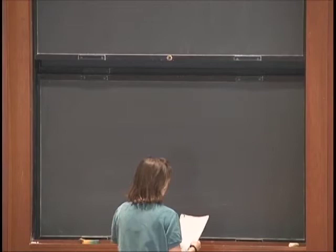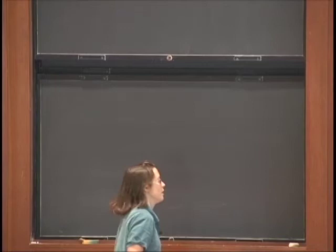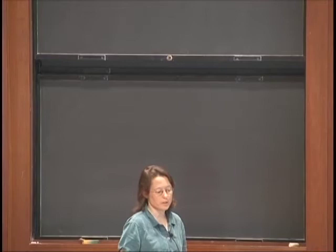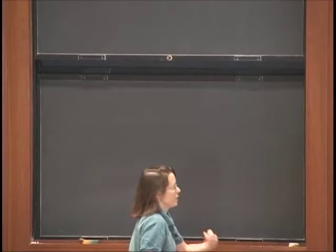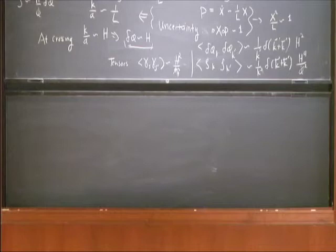We discussed a few of the mechanisms yesterday in a survey. Today I'm going to be more systematic and discuss what we need to do to get a model of inflation in string theory in a consistent way — treating all the fields consistently. We need to make sure we're considering the fastest rolling direction in the scalar field space when we describe inflation in a theory like string theory, which has all sorts of additional degrees of freedom.